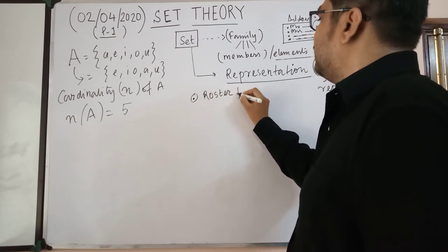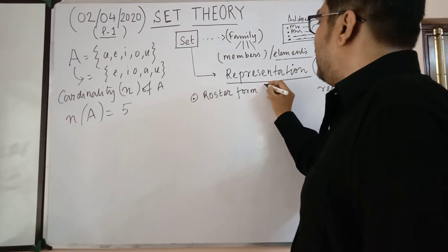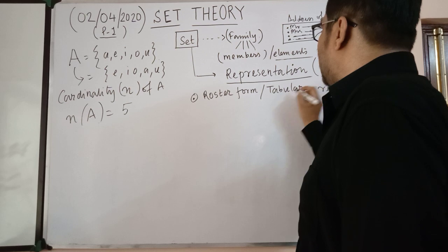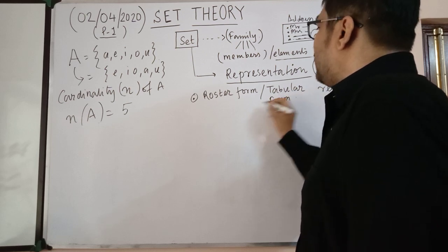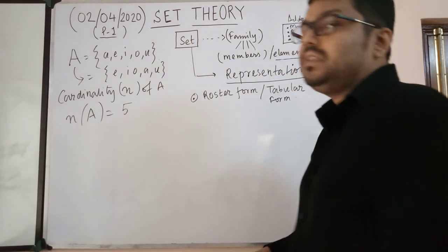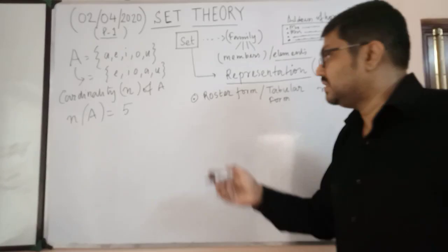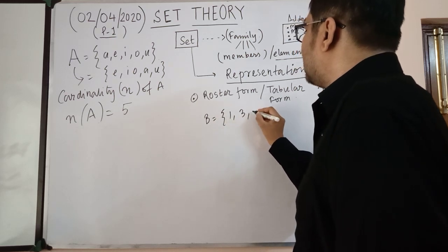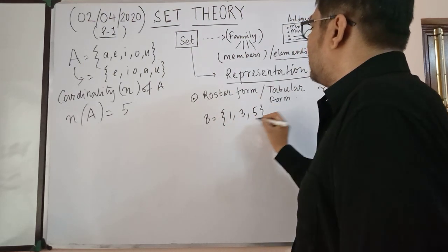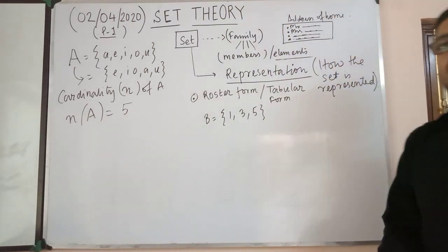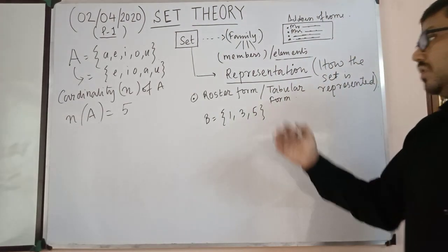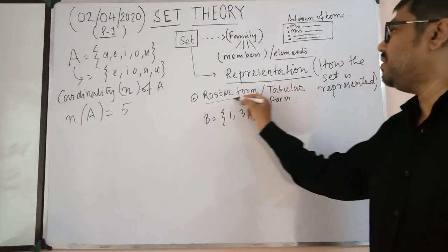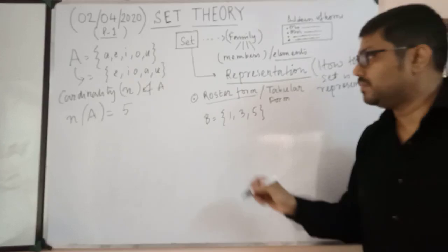As you have already seen, we can write set A = {a, e, i, o, u}. That is one form of representation. The first form is called the Roster Form, or you can also call it the Tabular Form, where the elements are directly written. For example, B = {1, 3, 5} is the roster form of set B.